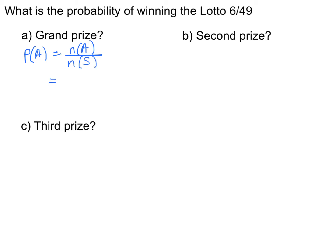To win the grand prize you have to choose all six of the six winning numbers, so that's 6 choose 6. The total number of possible outcomes is 49 choose 6, since there are 49 numbers and you choose six. 6 choose 6 is just 1, and 49 choose 6 is 13,983,816 — a pretty small probability.